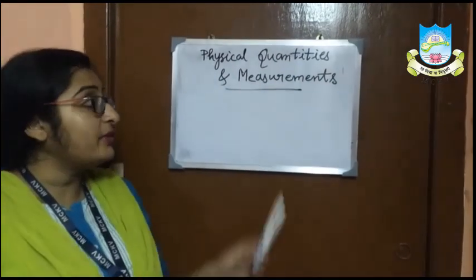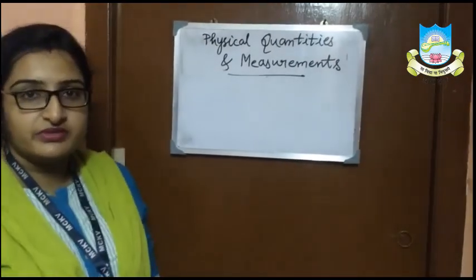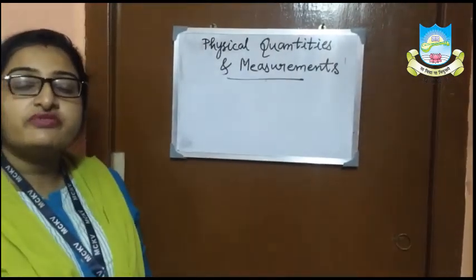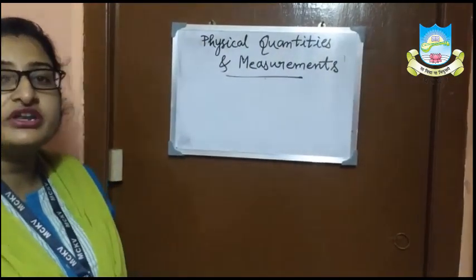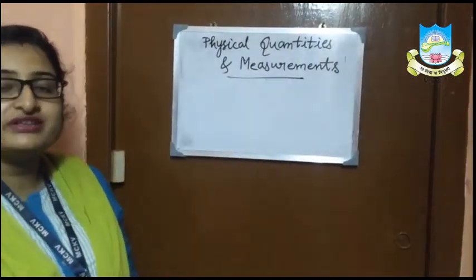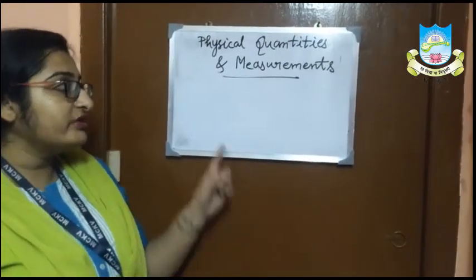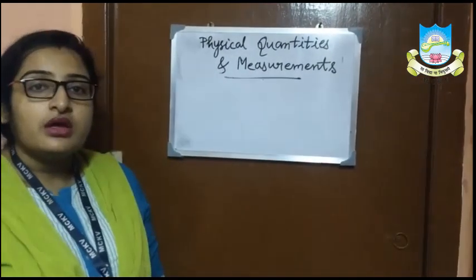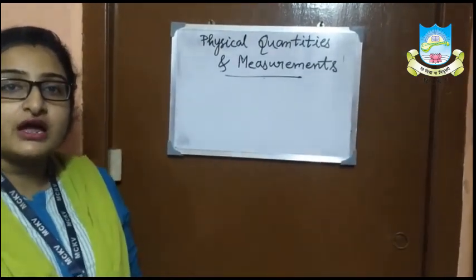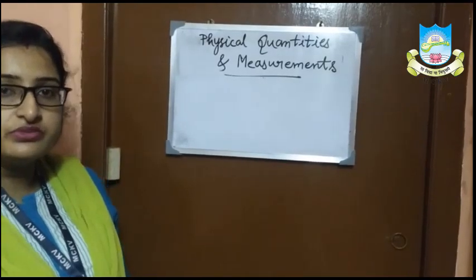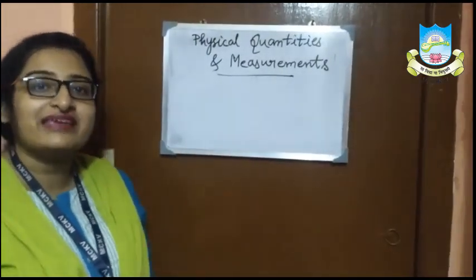Today we will discuss about physical quantities and measurements. Physical quantity is a quantity that can be measured. Measurement is the comparison of an unknown quantity with a known fixed quantity of the same type.